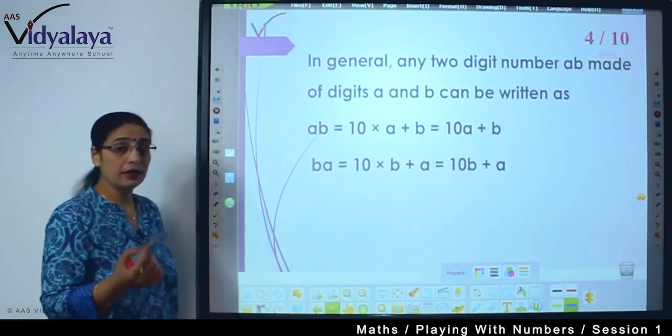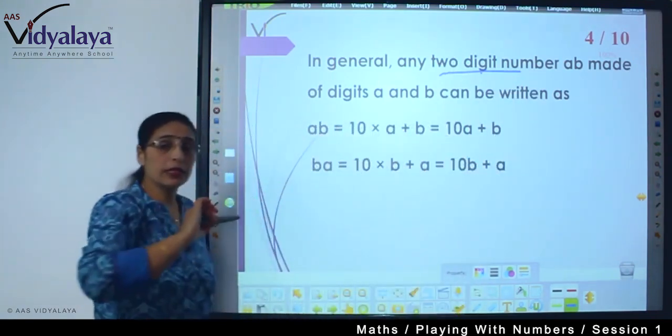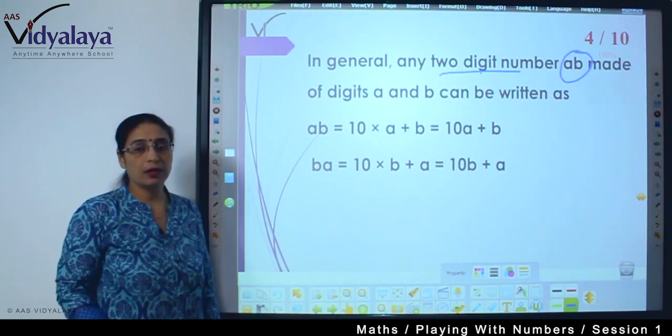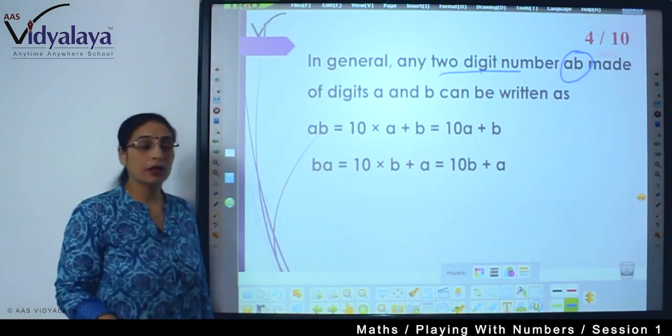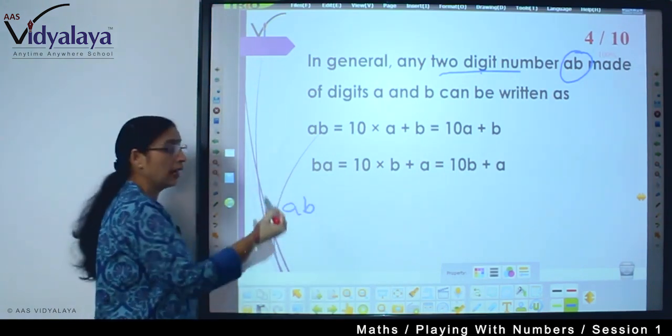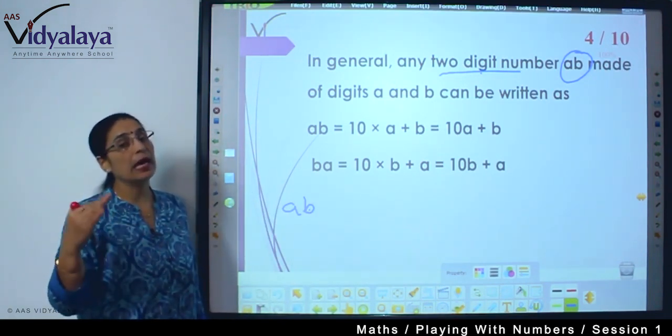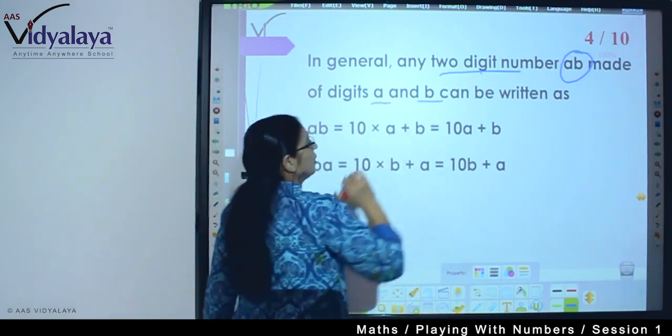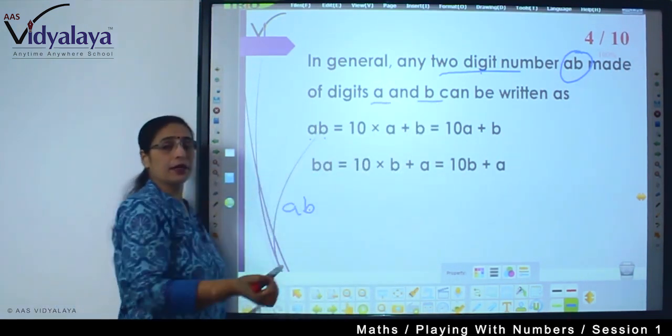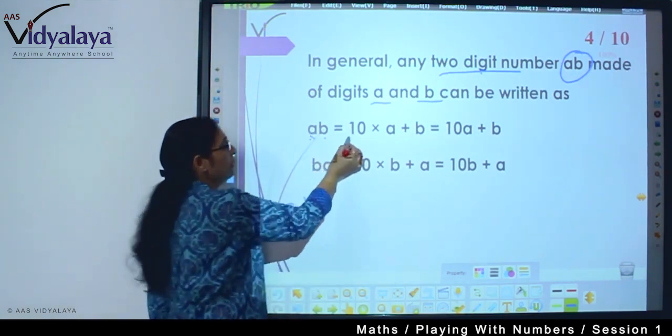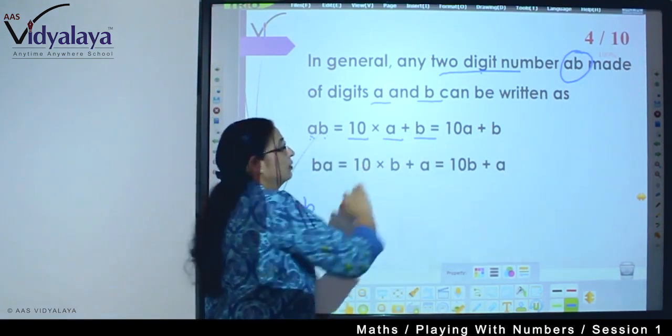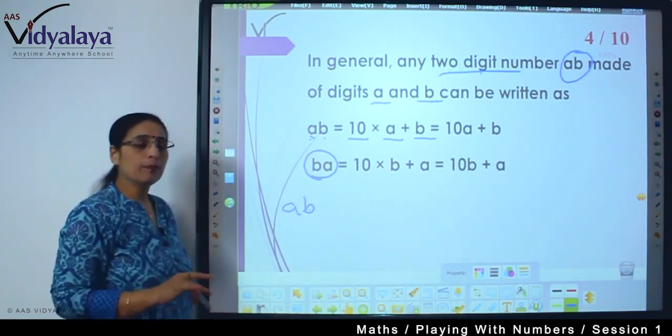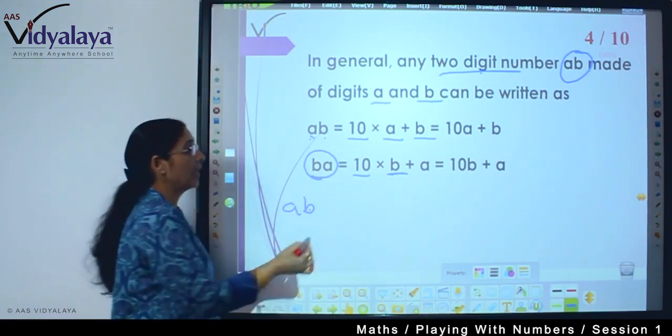In general, if there is any two digit number, two digit number we are assuming ab. We always go with the variable, so we take variable, it can be any number. So if I am saying ab, it can be any number from 0 to 9, and same with b from 0 to 9. So if we take two digit number ab, it is made up of two digits that is a and b. So how can ab be written? a is at tens place, so I can write 10 into a and then I will add b.